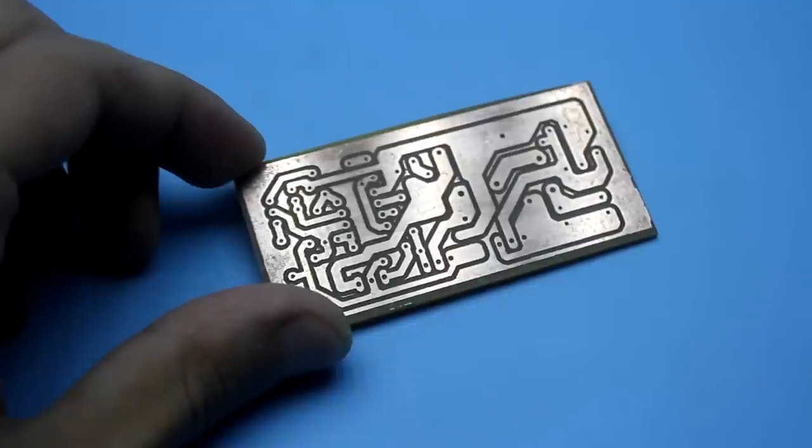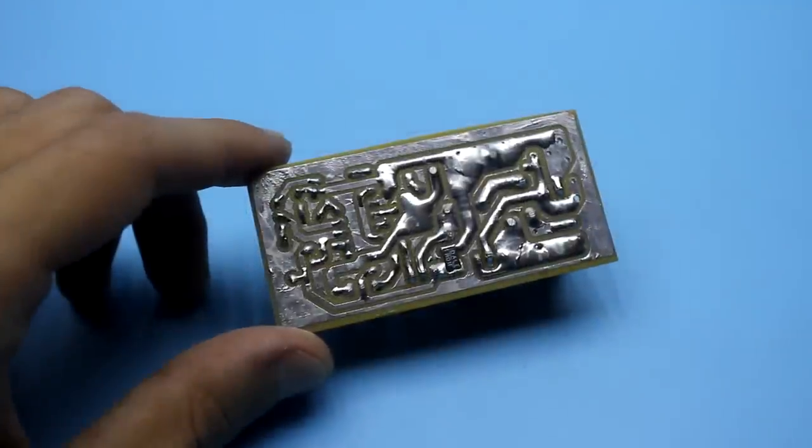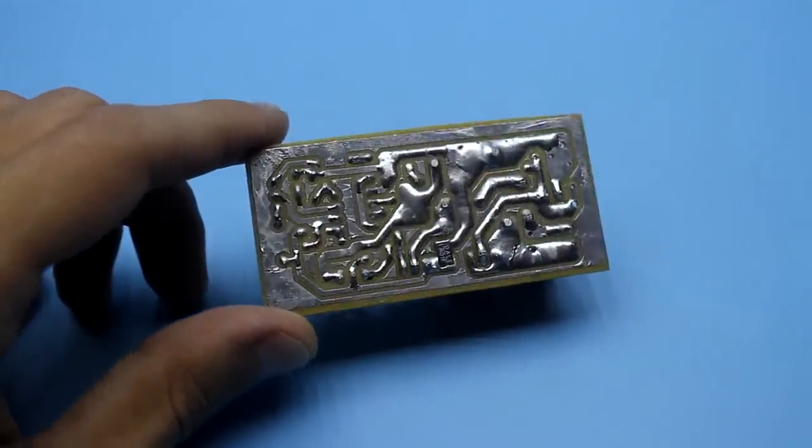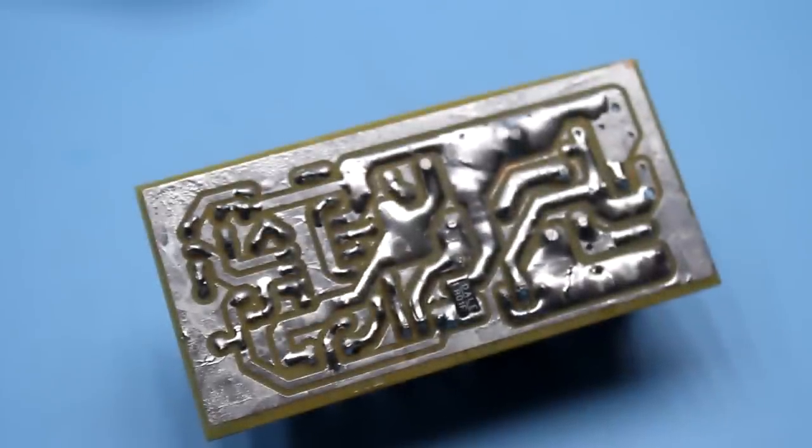In addition, I will say that the powered tracks of the printed circuit board must necessarily be strengthened with solder, because considerable currents will flow through them.